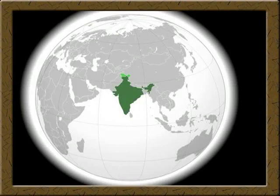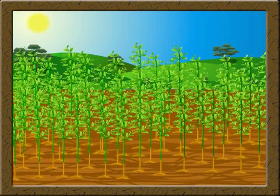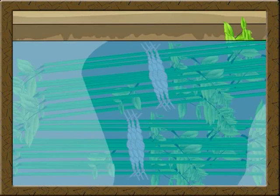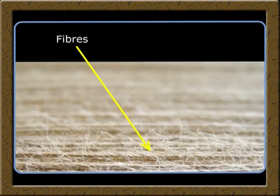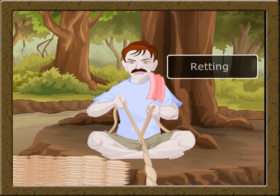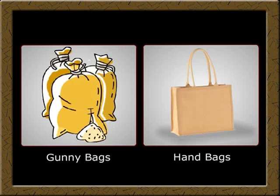Along with natural and artificial clothes, we use bags and ropes in our everyday life. We get all these from plant fibers. You must have seen rice stored in bags — do you know what these bags are made of? These bags are made of jute. Jute is cultivated in India. The stems of the jute plant are dipped in water for a few days, and with this the stems rot. Then fibers are separated from the stems. The fibers are spun into threads and made into ropes. This process is called retting. Jute is used to make gunny bags and handbags.